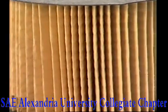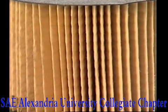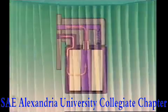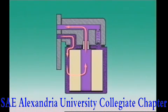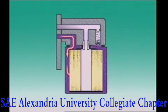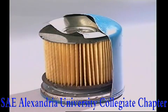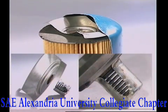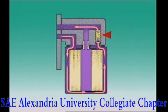The full flow filter uses pleated filtering paper in a metal housing to collect harmful particles. Normally all oil goes through the filter before it gets to the engine, but if the filter clogs up it can starve an engine of oil. As a safety measure, full flow filters have a bypass valve.